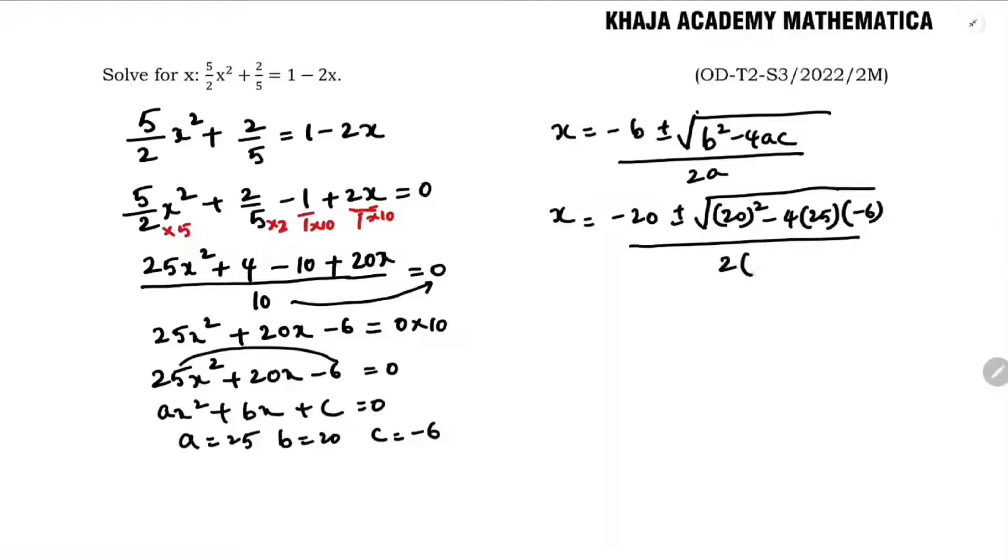So 2 times a, which is 25. So x = -20 ± ... This is nothing but 400, minus into minus plus, 4 into 25 is 100, 100 into 6 is 600, 600 by 50.